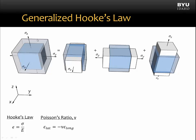Let's consider the strain occurring in the X direction when we have stresses in all three dimensions — X, Y, and Z. Beginning with our X direction stress, it is a normal stress in tension. When applied to the element, we expect strain also in the direction of the stress, so that will be a positive strain equal to the stress in the X direction divided by the modulus of elasticity. That's Hooke's Law in one dimension.